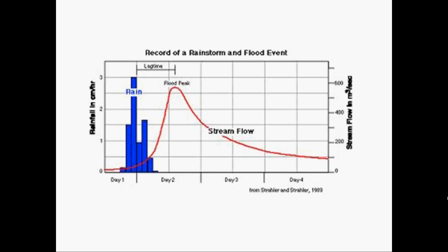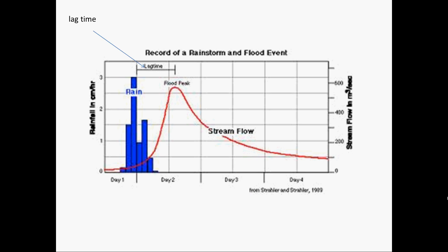So, this is the storm hydrograph. This week I will label and briefly explain each part. This is the rain, and this is the water in the river at a set time. This is the lag time — in this case just over half a day. The lag time is basically the reading between the highest rainfall reading and the highest streamflow reading, which tells us how long it takes for the rain to get to the river.